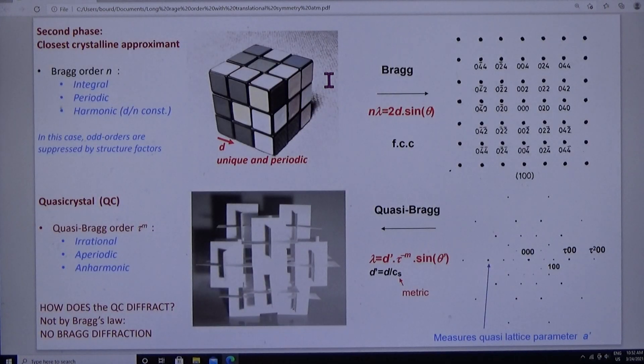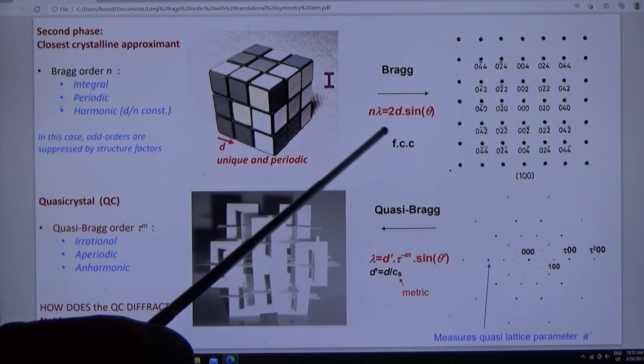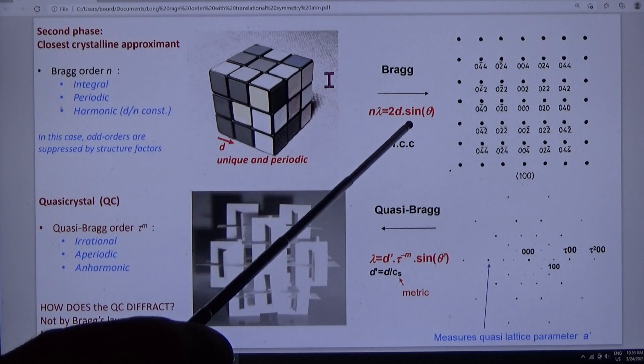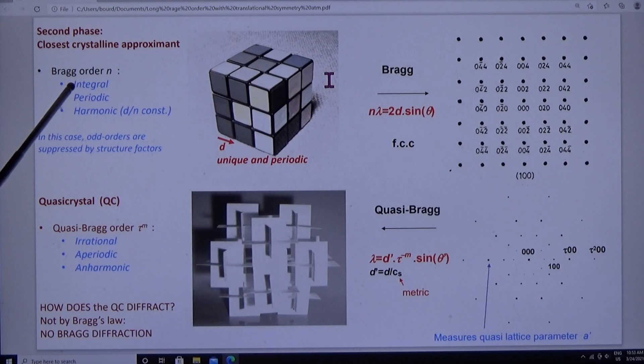So what's the problem? Aluminum-6-manganese melt-spun condenses to more than one phase. The second phase is crystalline. It follows Bragg's law, n lambda equals 2d sin theta, where n, the order, is integral, periodic, harmonic.